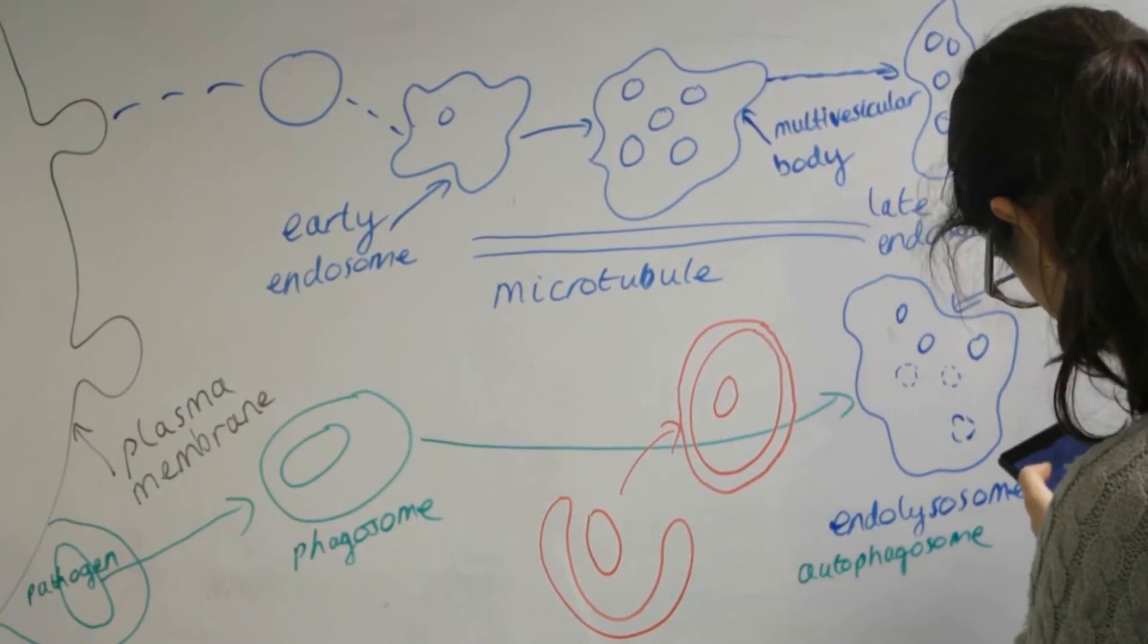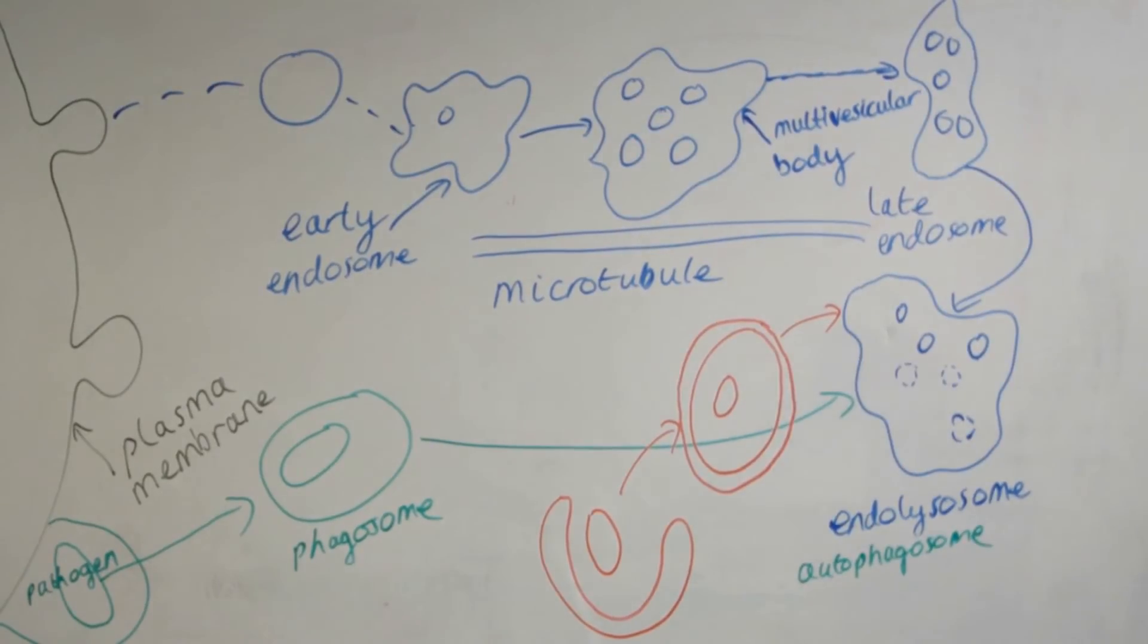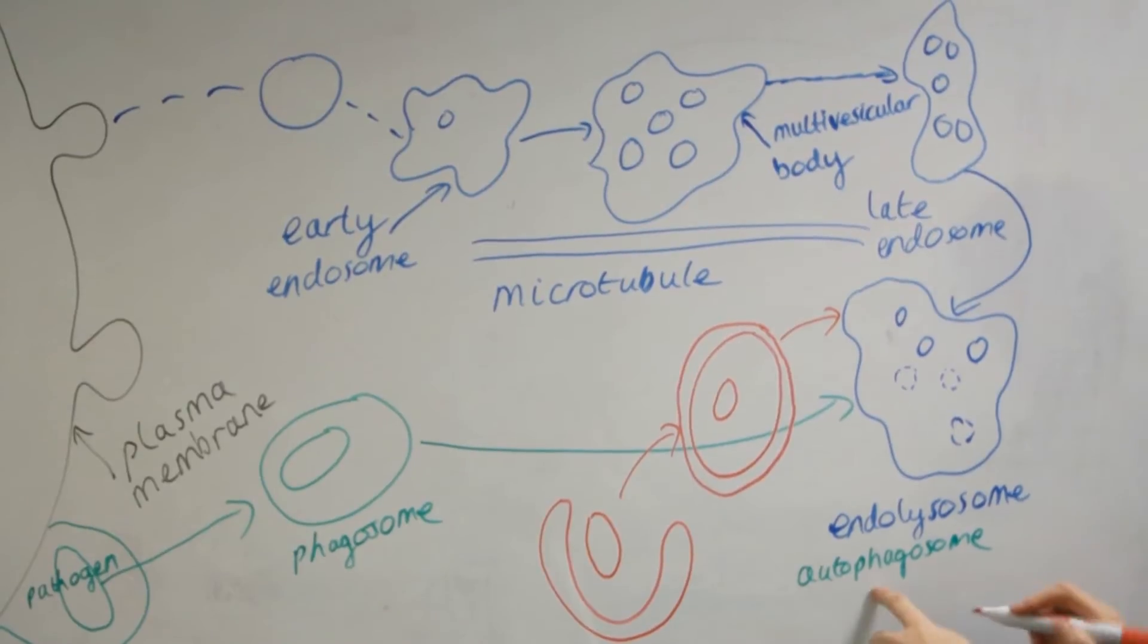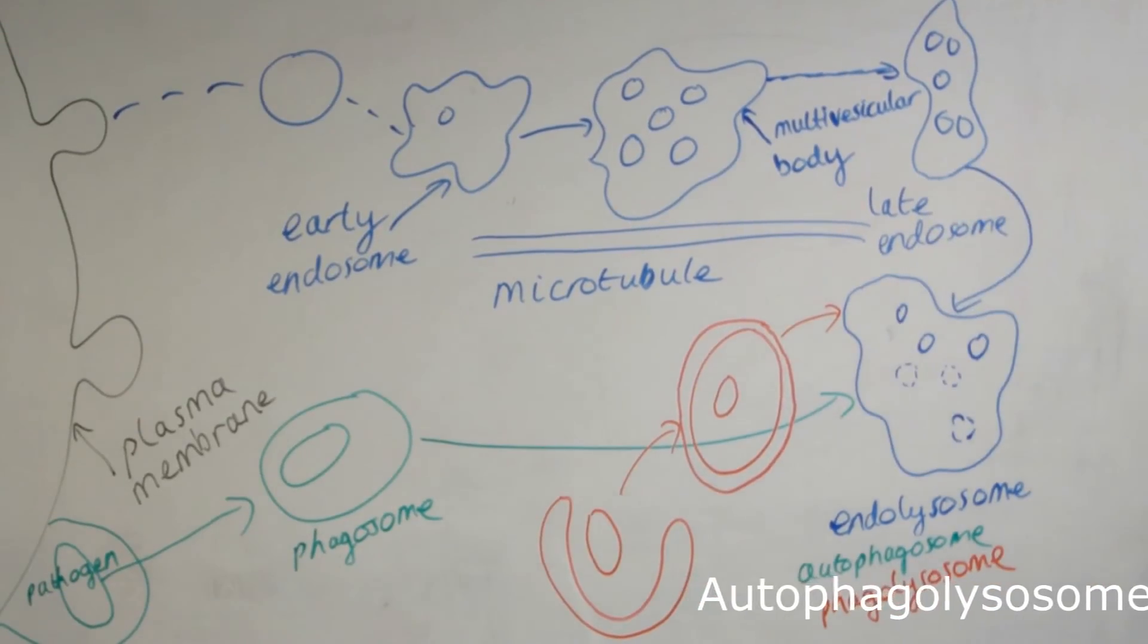This autophagosome then also travels towards the lysosomes along the cytoskeleton of the cell and fuses with them. This forms an autophagolysosome. The contents are then degraded by the lysosome.